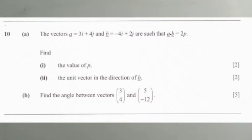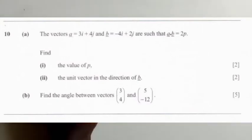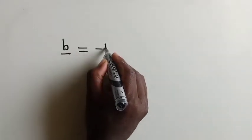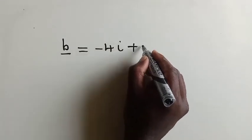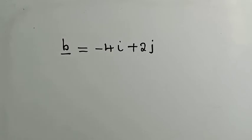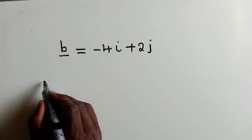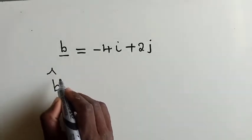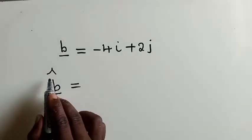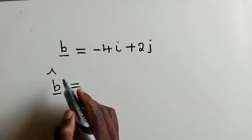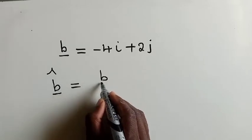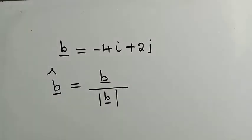The next question, they want us to find the unit vector in the direction of B. We know our vector B is equal to negative 4i plus 2j. This is our vector. So now, to find the unit vector, we can use the formula, we need to use the formula vector B cap. This cap shows that it's a unit vector is equal to vector B itself over its magnitude.